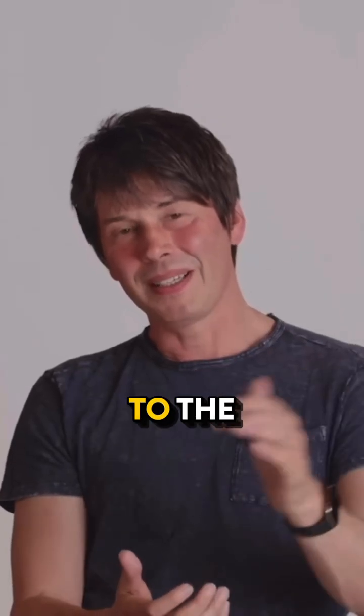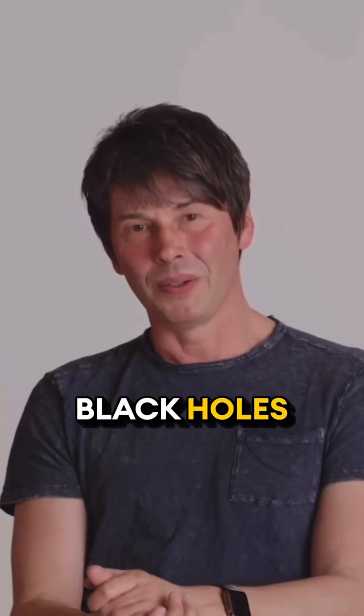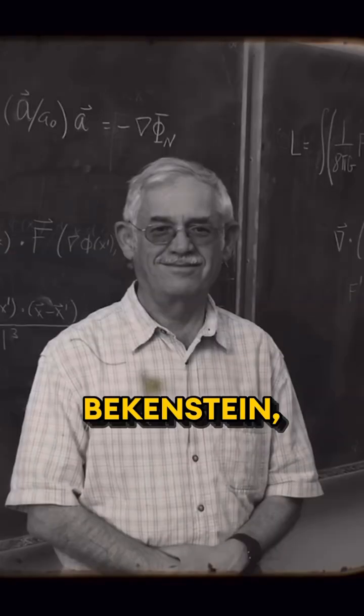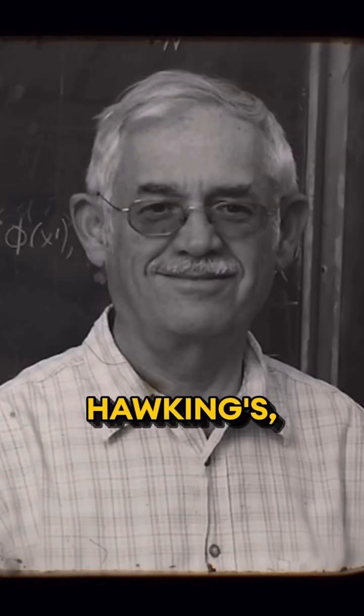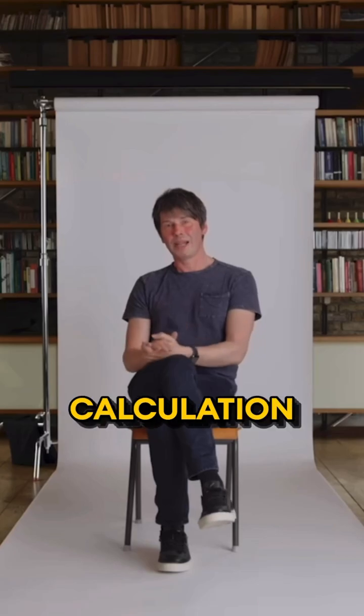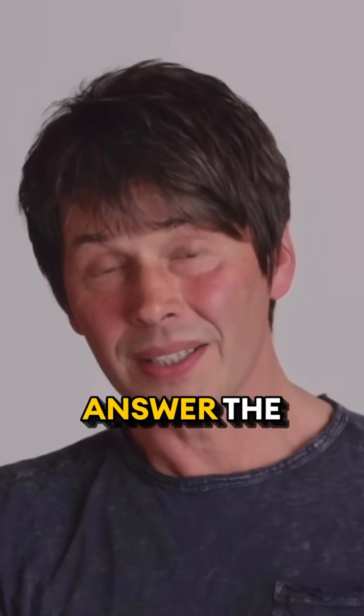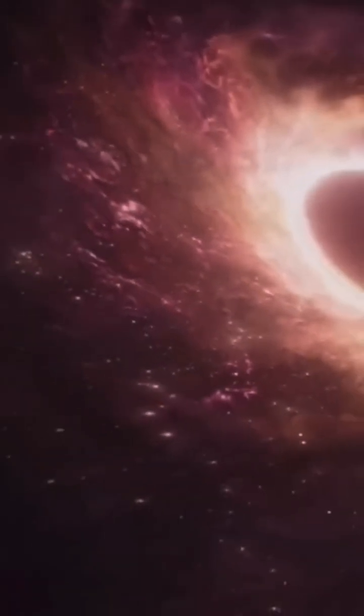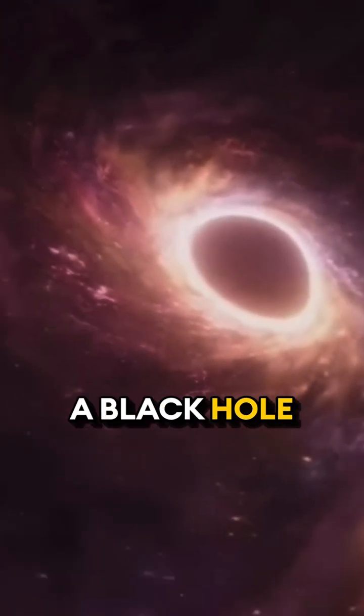If we go back right to the beginning of the work on black holes in the 1970s, Jacob Bekenstein, colleague of Stephen Hawking's, noticed in a simple calculation that you can answer the question: how much information can a black hole store?